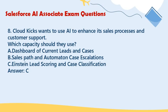Question 8: CloudKix wants to use AI to enhance its sales processes and customer support. Which capability should they use? A. Dashboard of current leads and cases. B. Sales path and automation case escalations. C. Einstein lead scoring and case classification. Answer: C.